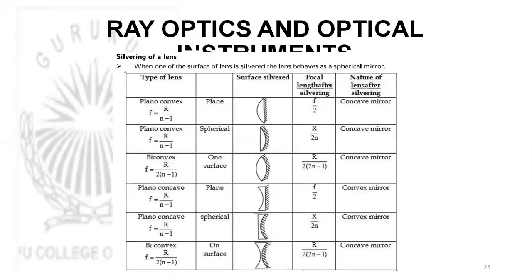Silvering of a lens is an important concept in competitive examinations. For a plano-convex lens, after silvering the focal length F = R/(N minus 1), and the nature becomes concave mirror. For equi-convex with one surface silvered, F = R / (2*(2N minus 1)). For plano-concave with plane surface silvered, focal length is F/2 and it acts as a concave mirror.